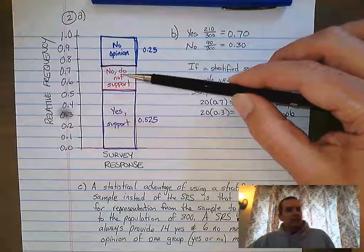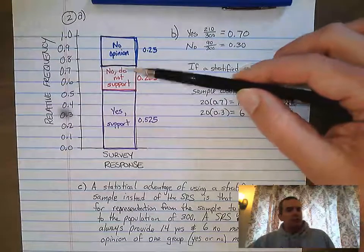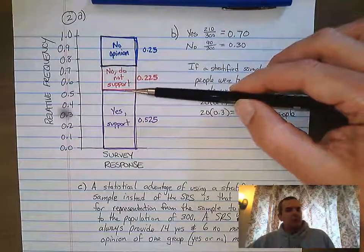The next group was 90. When we dealt with those 90, they said no, do not support. That worked out to 22.5%. So this part of the bar starts at 52.5%.